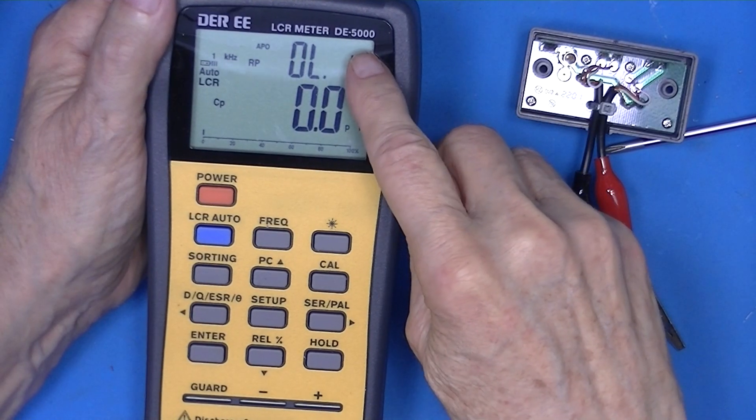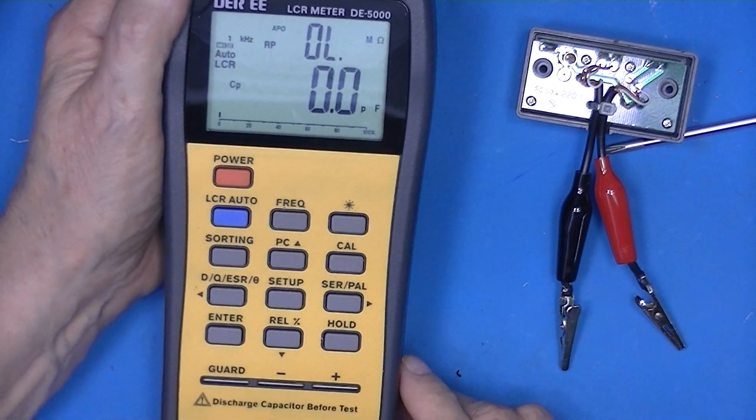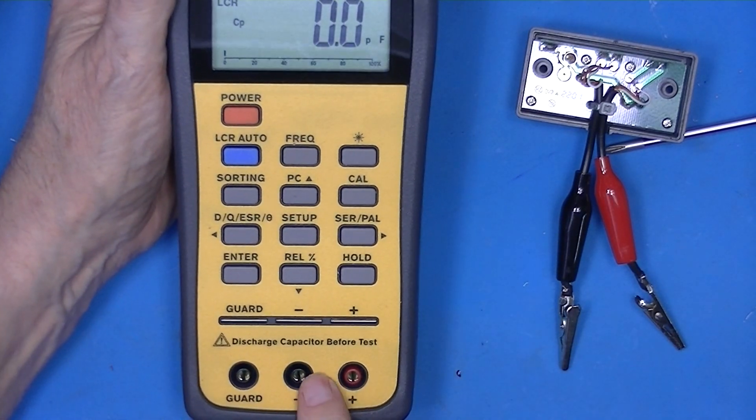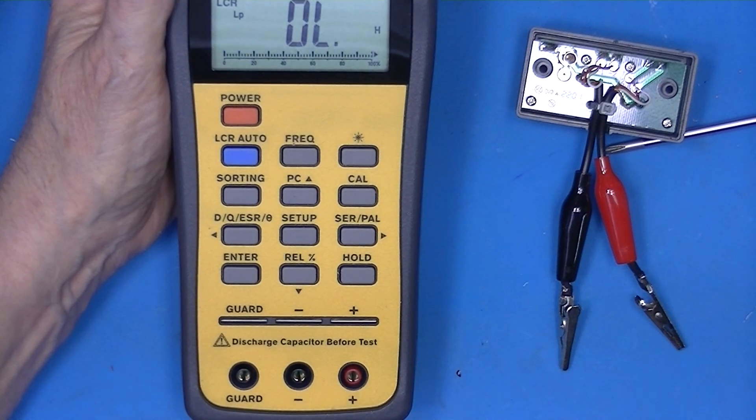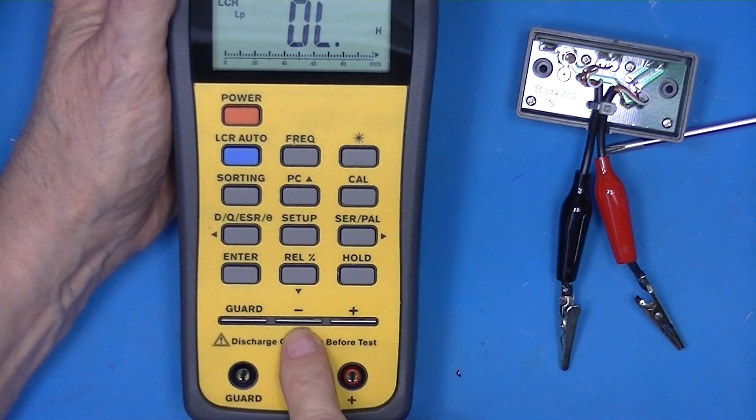This is a DE5000 LCR meter. It's capable of two wire measurements using banana jacks or four wire measurements using these two slotted connectors.